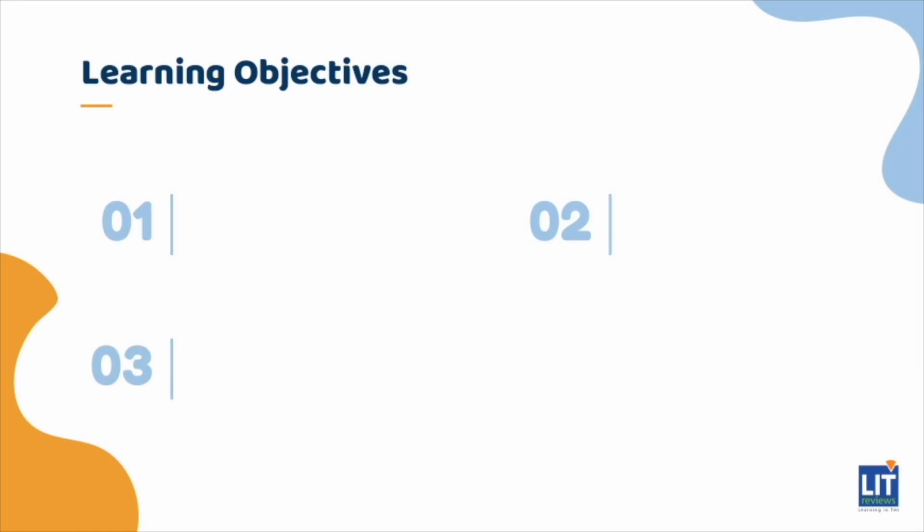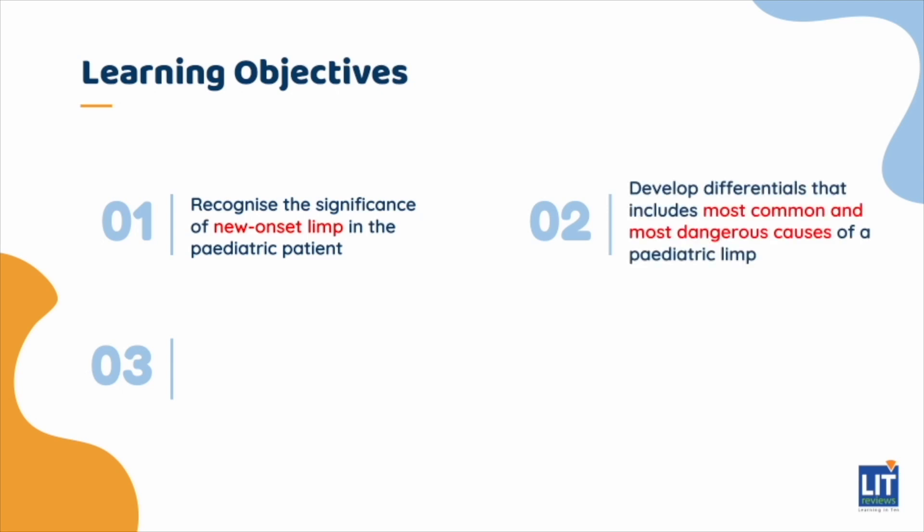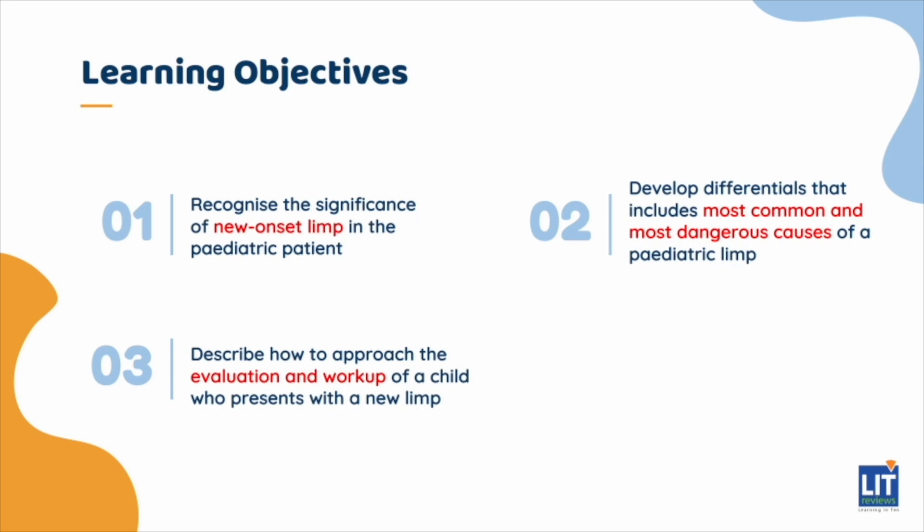By the end of this presentation, you will be able to recognize the significance of new-onset limp in a pediatric patient, develop a differential that includes the most common as well as the most dangerous causes of pediatric limp, and describe how to approach the evaluation and workup of a child who presents to your clinic with a new limp.